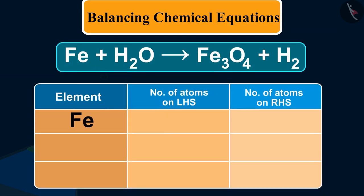The number of iron atoms on LHS is one and on RHS is three. The number of hydrogen atoms on LHS are two and on RHS are also two. Oxygen atoms: one on LHS and four on RHS.